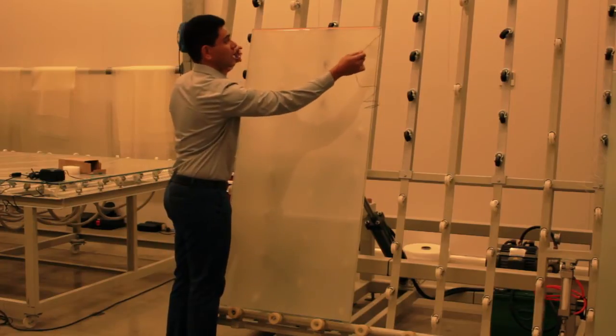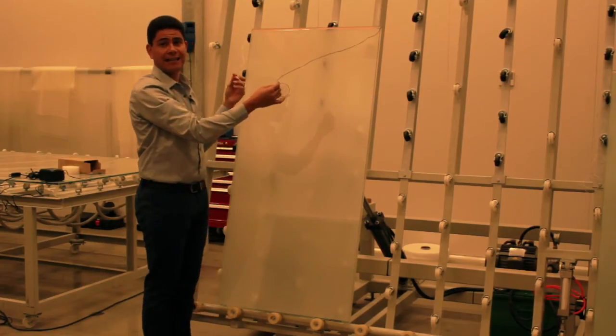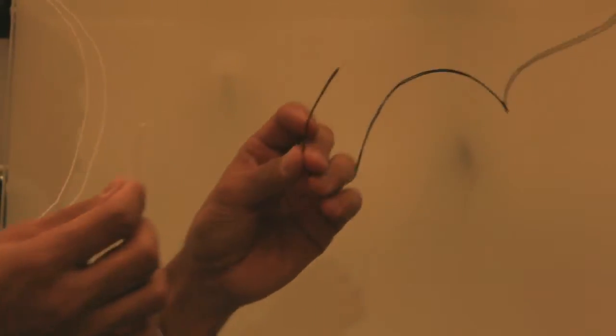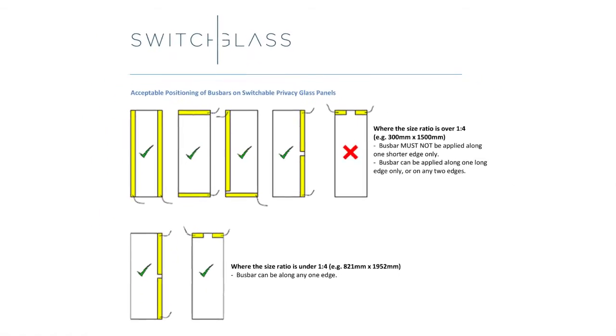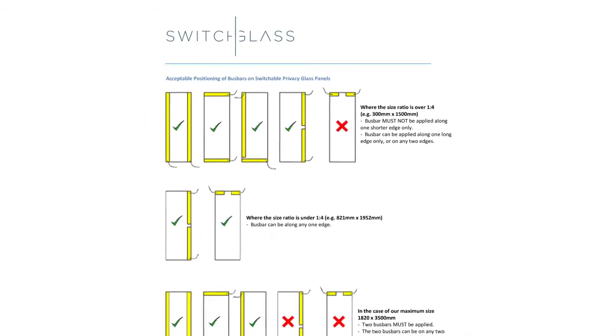This single buzz bar will have a wire coming out at each side, again one black and one white. You can find out more by downloading the fact sheet from our website www.switchglass.com.au.